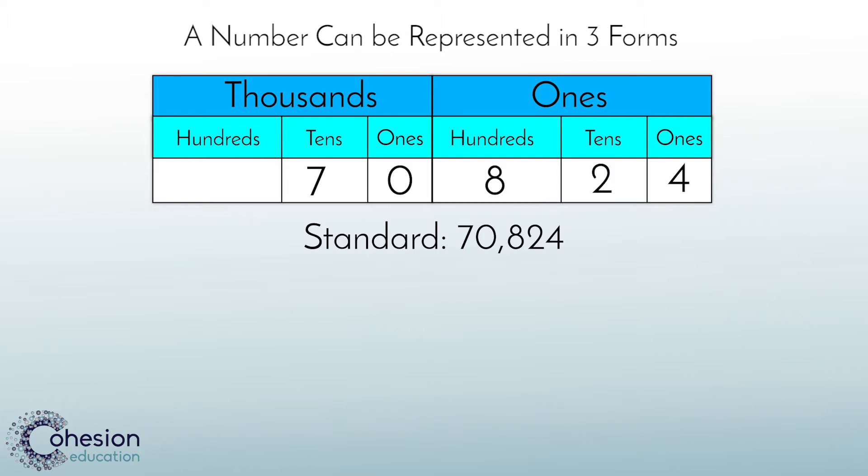In standard form, we use commas to separate periods. Periods are three digits within a larger number, separated by commas. They help students to say a number clearly and with ease. For example, 70,824. Notice how the comma separates the thousands period from the ones period here.